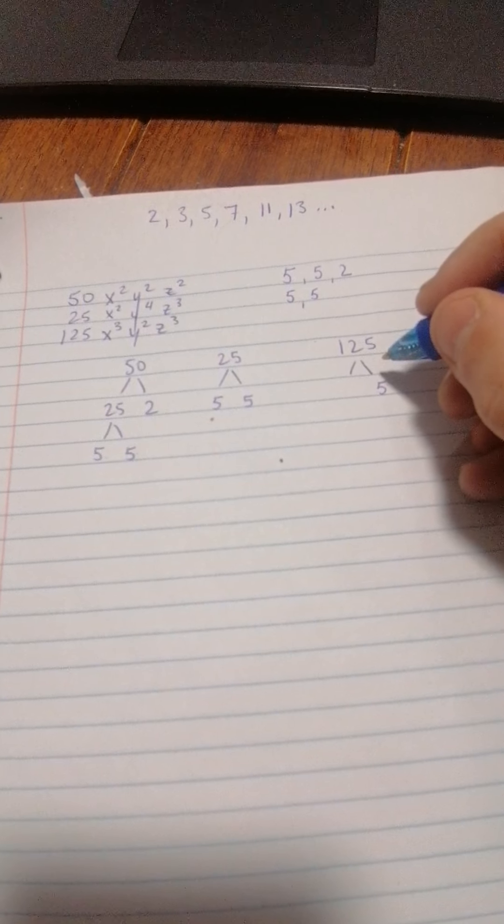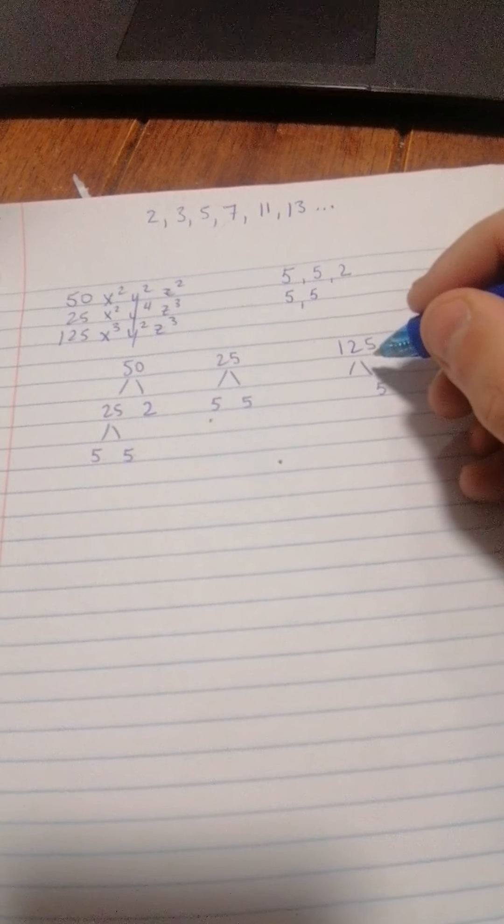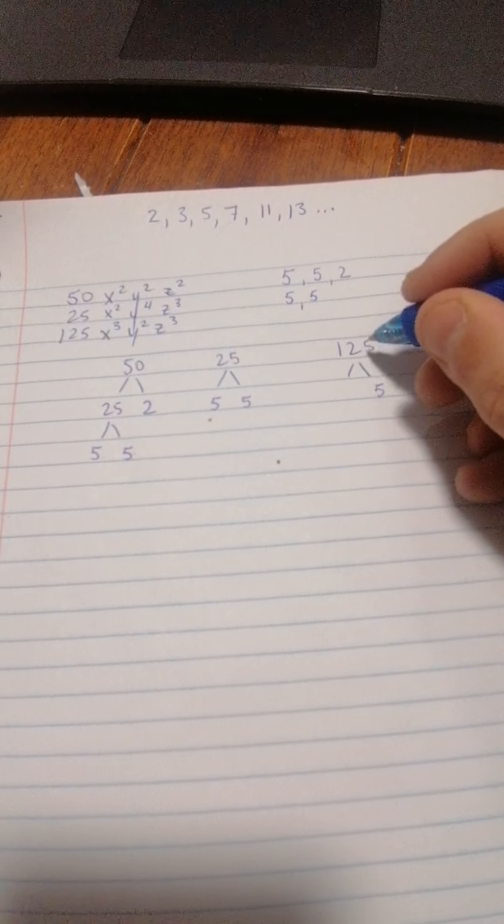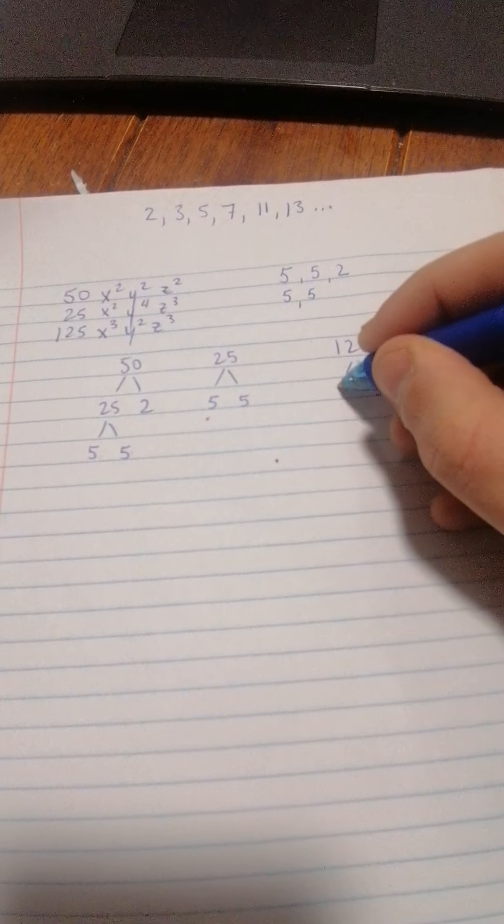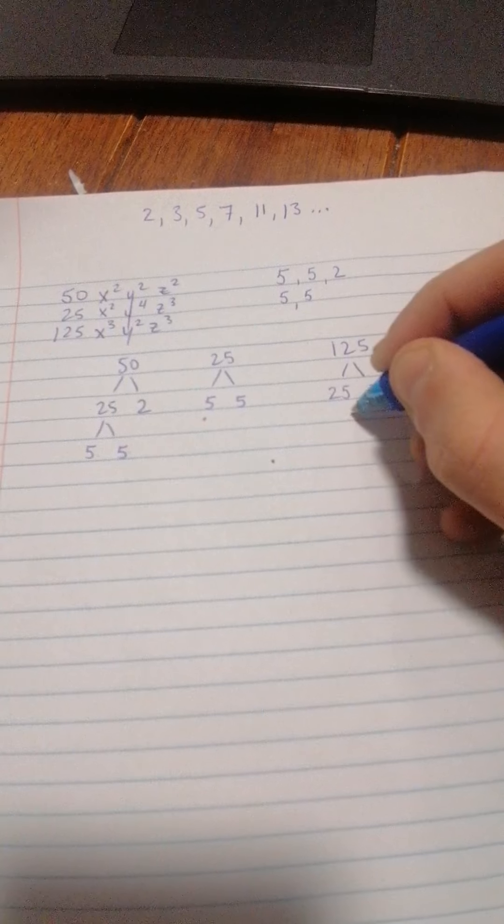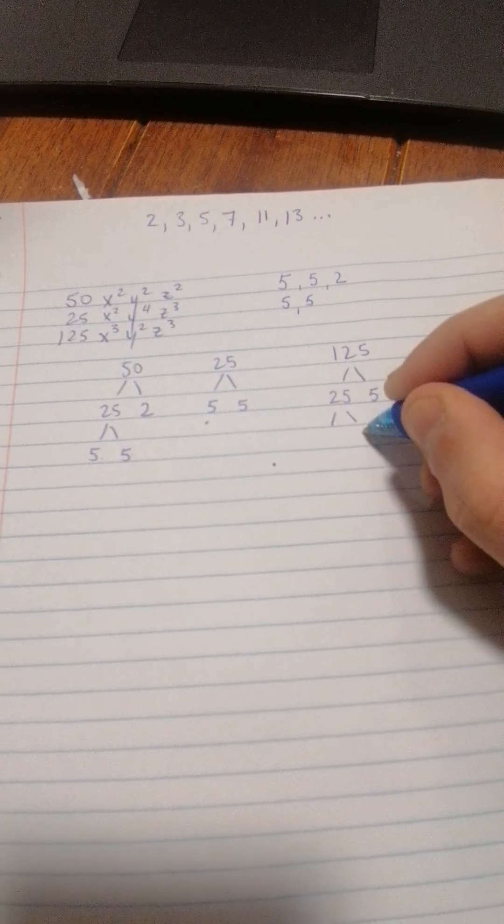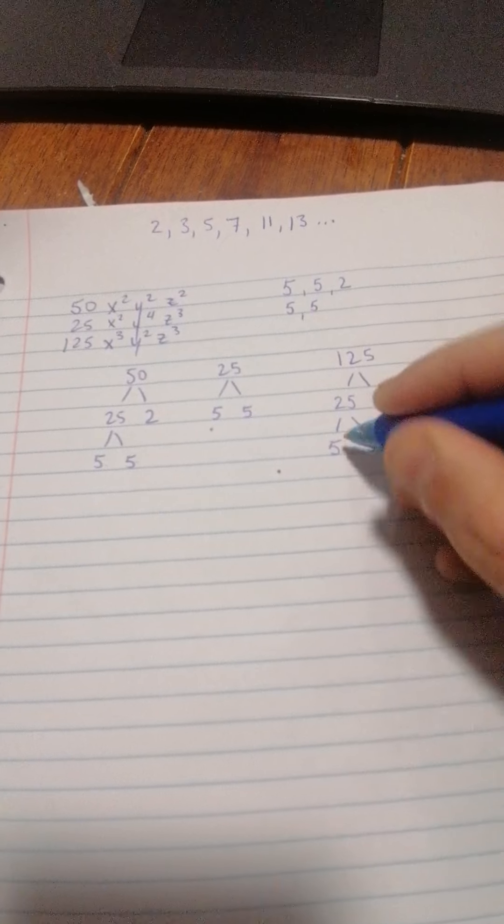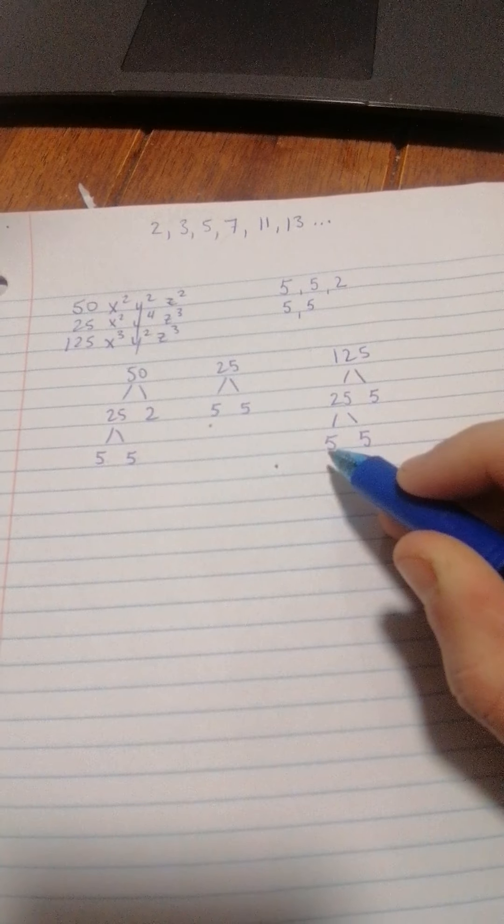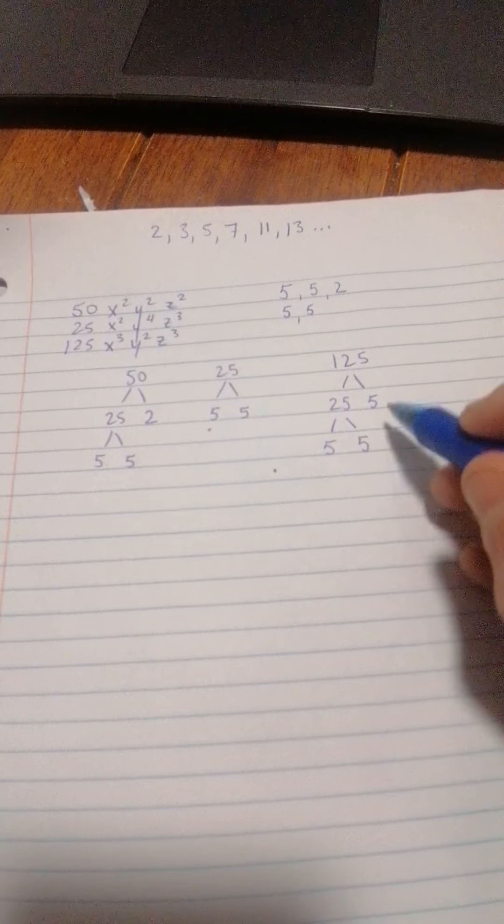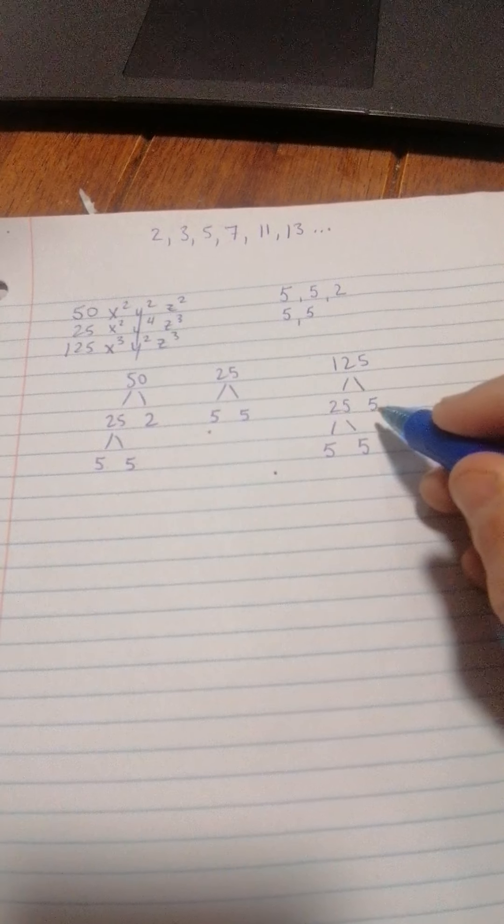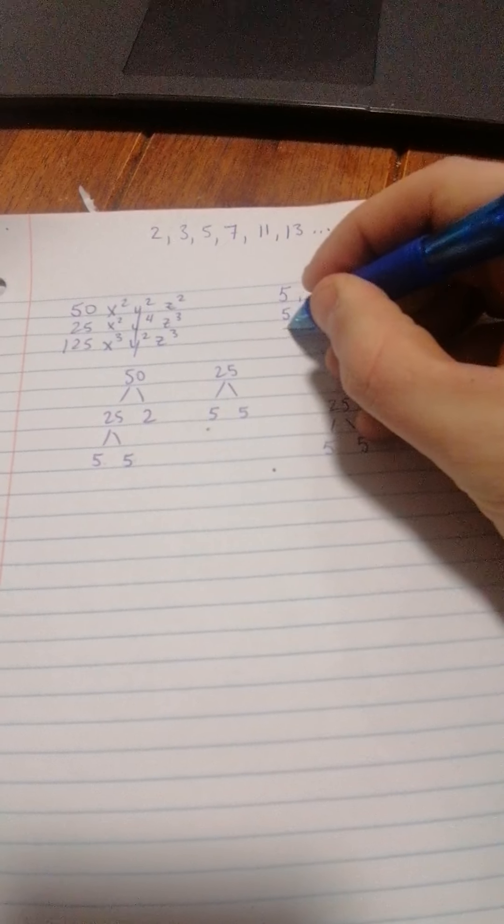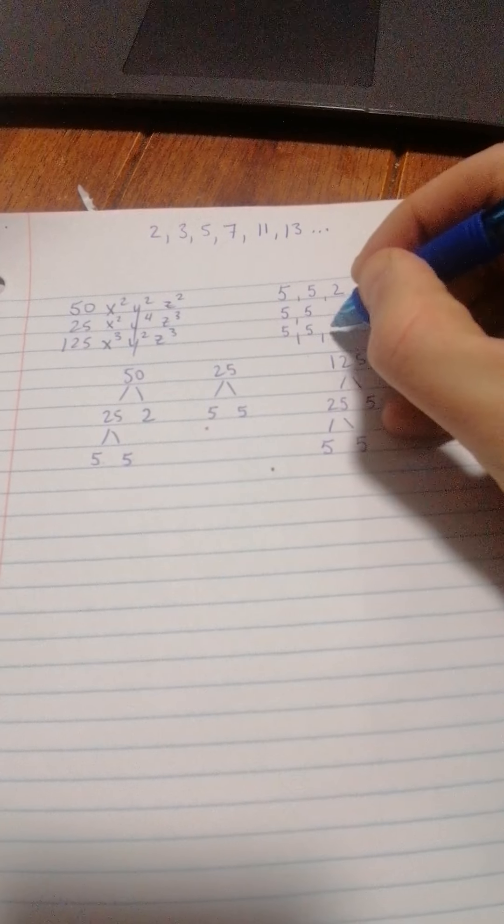Usually you can do this with a calculator once you get to bigger numbers, or if you're really good at math you can do it in your head. In any case, 125 divided by 5 equals 25, and we've already done that one, so that only divides evenly by 5. That's a prime number, so these are three factors: 5 times 5 times 5 equals 125.